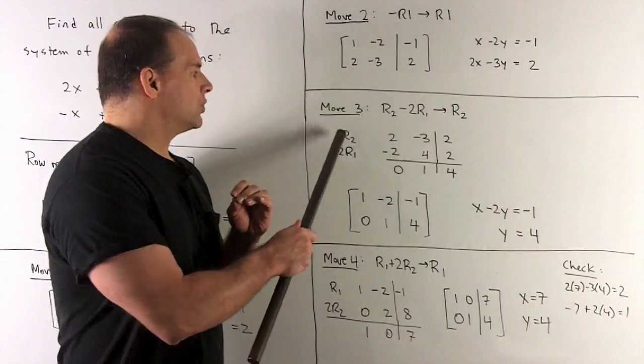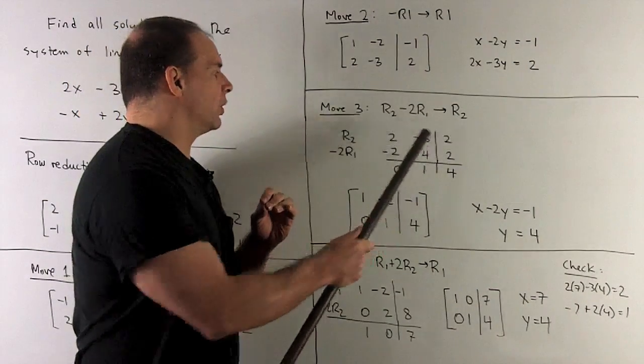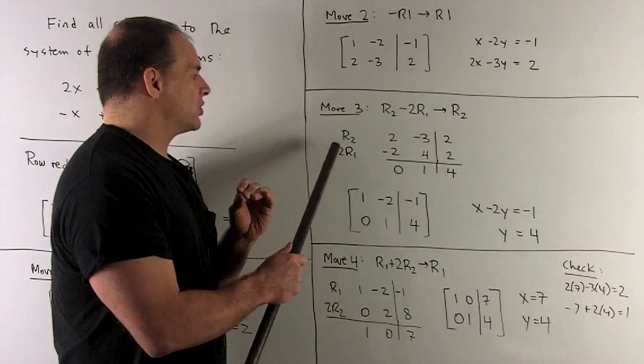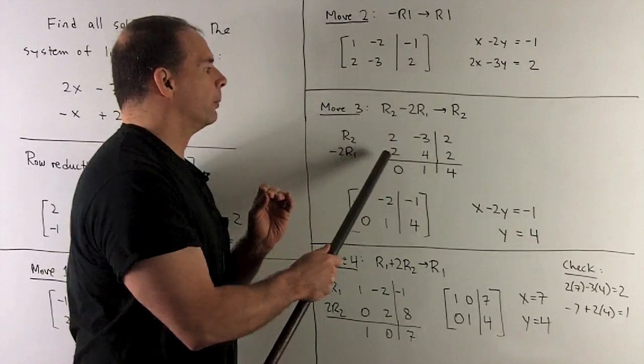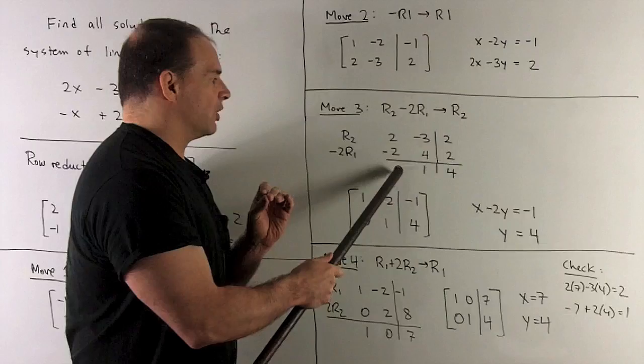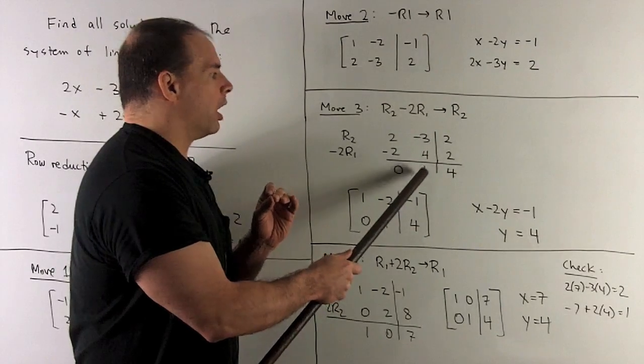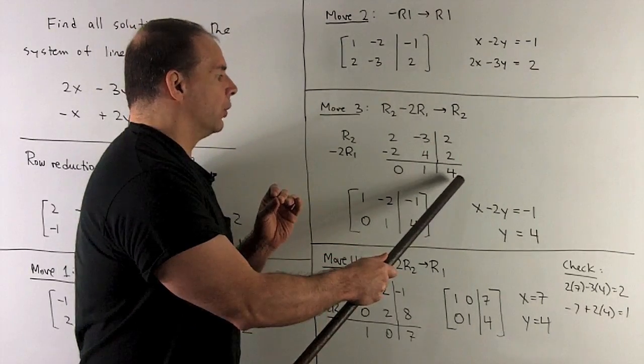Now, I want row 2, so that's 2 minus 3, 2. We're going to take minus 2 row 1. So that's minus 2, 4, 2. We add. We get the 0 that we were promised. We get a 1 and a 4. So that's the new row 2.